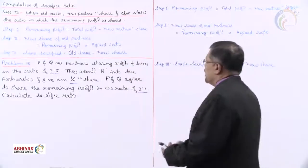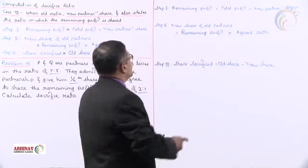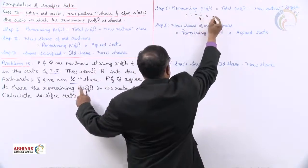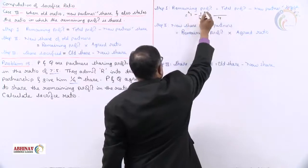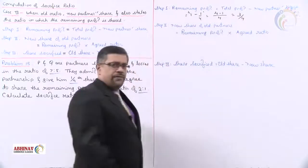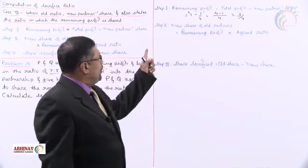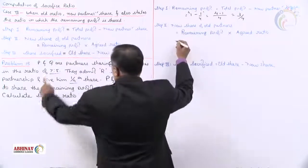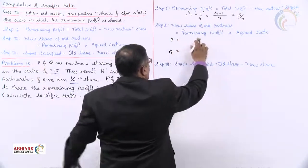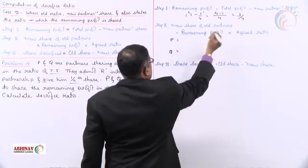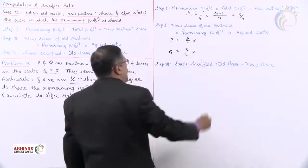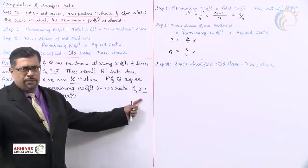Using the same steps: Step 1 — remaining profit. Total profit assumed is 1, new partner's share is 1/4. LCM is 4, so remaining profit = 4/4 minus 1/4 = 3/4. Step 2 — new share of old partners P and Q. We distribute remaining profit 3/4 in the agreed ratio, which is 2:1.